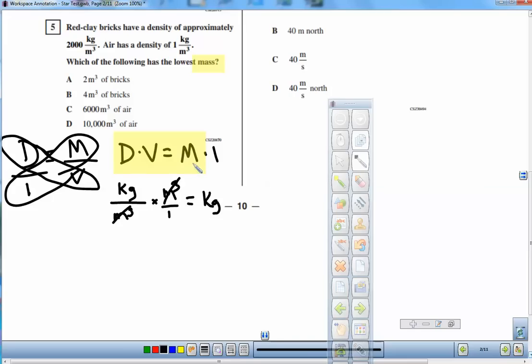So let's go ahead and use this equation. So we're going to find the mass of 2 cubic meters of bricks. To do that, we will multiply the density of the bricks, which is 2,000 kilograms per meter cubed, multiplied by the volume of bricks, 2 meters cubed. And remember, the meters are going to cancel out. We end up with 2,000 times 2, which is 4,000 kilograms.